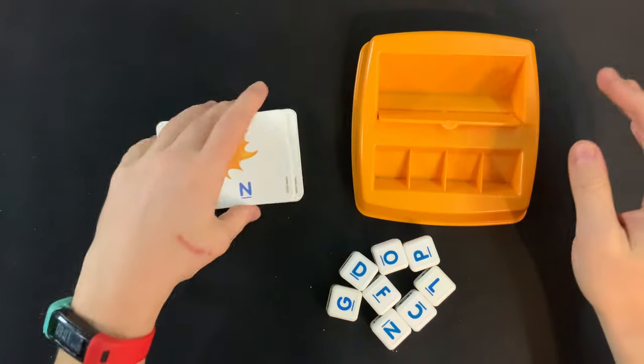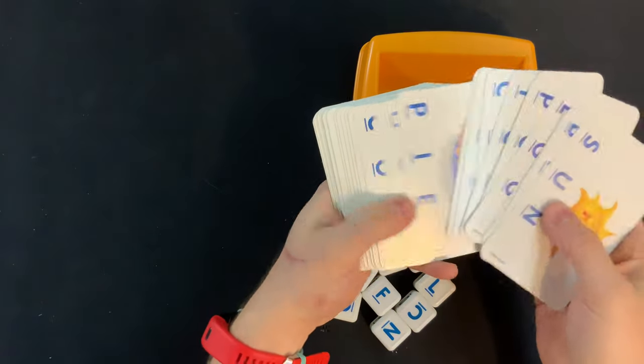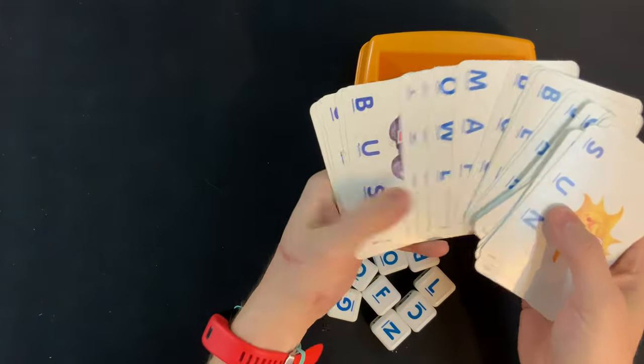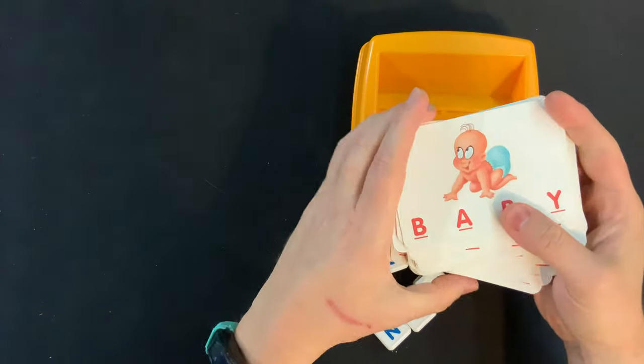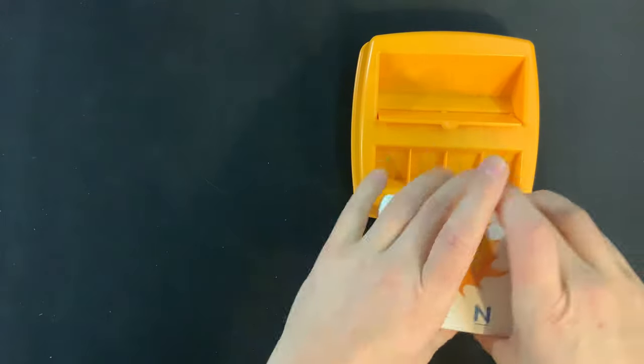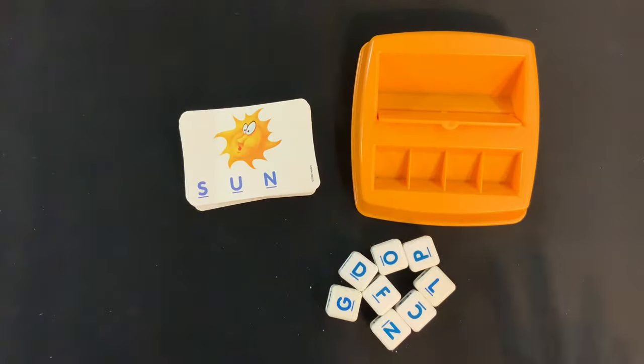Now the first thing you want to do is get out all the components and you're going to want to grab all the cards and make sure that they are all the same way. Now what that means is the letters on the bottom as you can see and three letter words on this side, four letter words on that side. Depending on the level of your child, you'll be using either three letter words or four letter words.